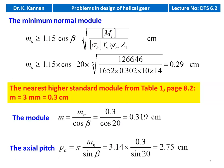The transverse module m = mn / cosβ = 0.3 / cos20° = 0.319 cm. Axial pitch Pi = π × mn / sinβ = 3.14 × 0.3 / sin20° = 2.75 centimeter.